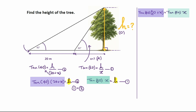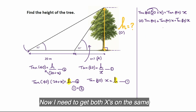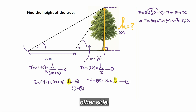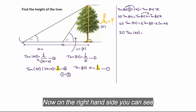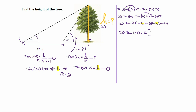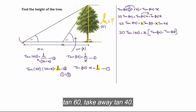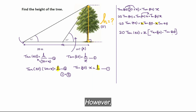We can write tan 40 times (20 + x) is equal to tan 60 times x. Now we are going to multiply out the brackets. I need to get both x's on the same side, so I'm going to move this to the other side. So 20 tan 40 is equal to — on the right-hand side we have x here and here as a common factor, so I'm going to take x out: x times (tan 60 − tan 40).